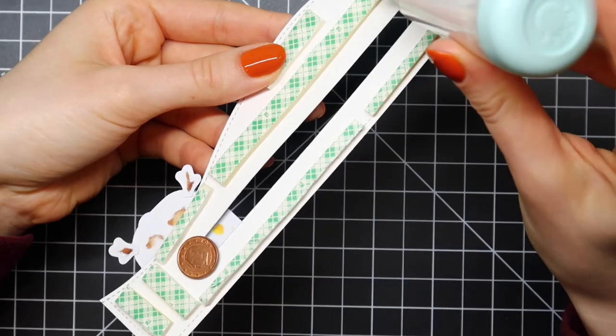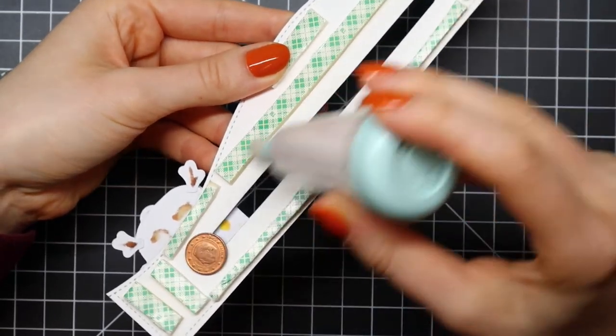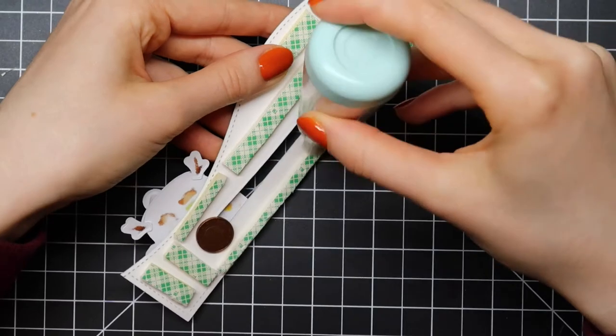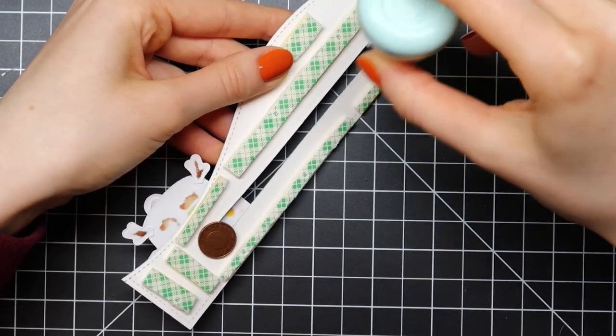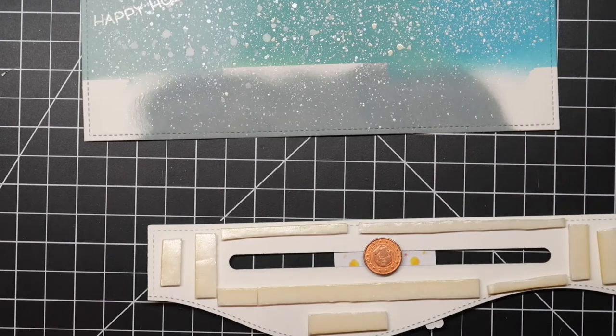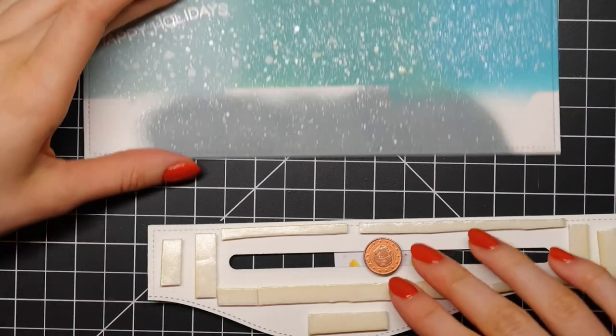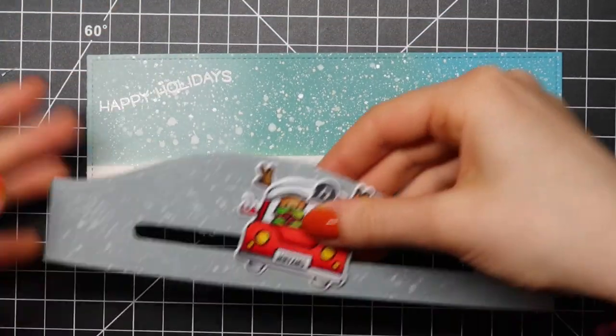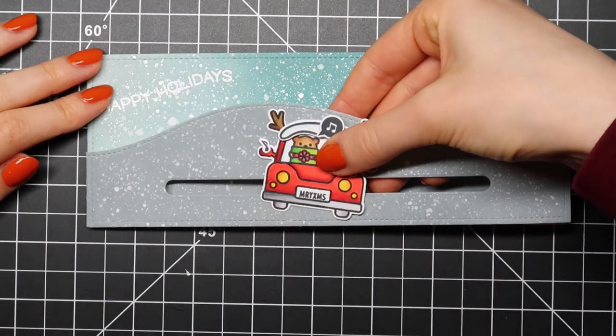I'm also going in with some more powder from my powder tool just to remove some stickiness from that double-sided foam tape, and then your penny will slide really easily and you'll have a really cool slider element on your card.